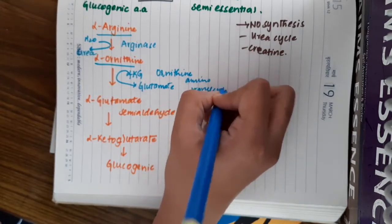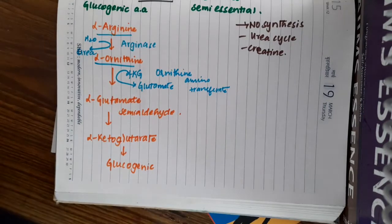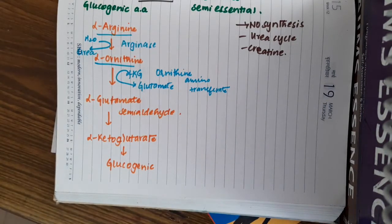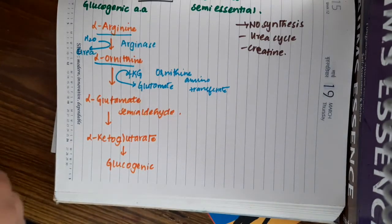Then, this alpha-ketoglutarate semi-aldehyde, through a series of reactions, it forms alpha-ketoglutarate which becomes glucogenic.